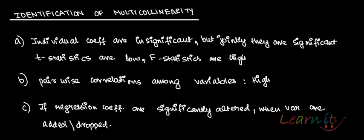So if you find that individually coefficients are insignificant but jointly they are significant, this is the sign of multicollinearity. If you find that the pairwise correlation among the variables is high, this is the sign of multicollinearity. If you find that when dropping some variables the regression coefficients are significantly altered, then again this is the sign of multicollinearity.